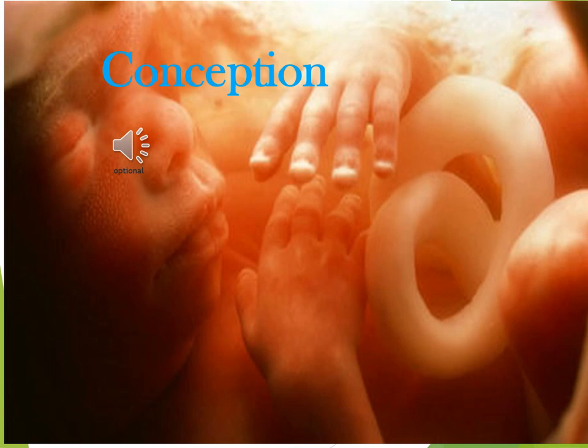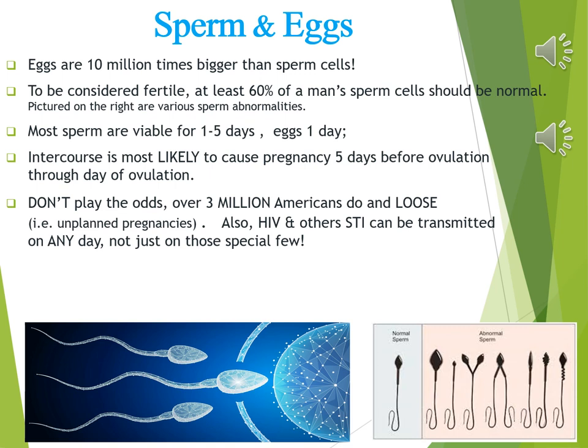We can define conception as when the sperm and egg cell join. Most sperm cells are viable for one to five days, and eggs for typically one day. Intercourse is most likely to cause pregnancy five days before ovulation through the day of ovulation. But don't play the odds — over three million Americans do yearly and face an unplanned pregnancy. About half of those end in abortion. Also remember that HIV and STI infection can occur any day of the month.